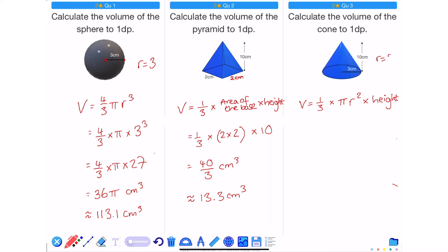R in this question is equal to 3. H is equal to 10. So substituting these values in gives me a third times pi times 3 squared times by 10. 3 squared is 9. So a third times pi times 9 times 10. 9 times 10 is 90. And a third of 90 is 30. So I'm left with 30 pi cm cubed.